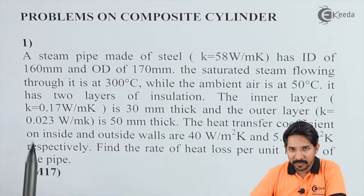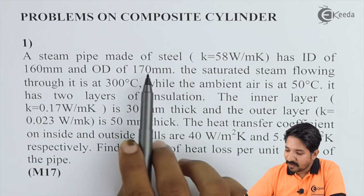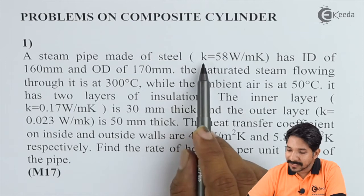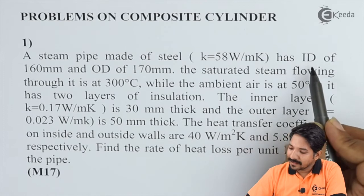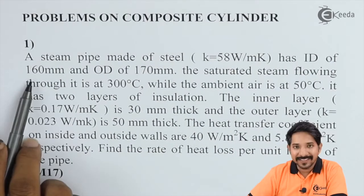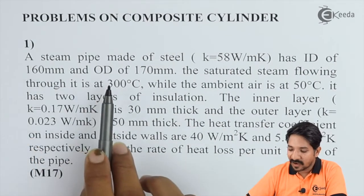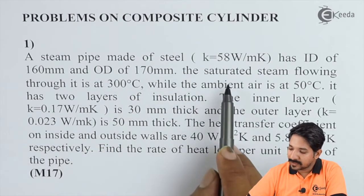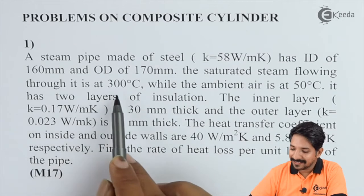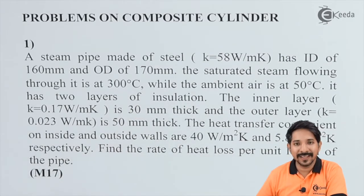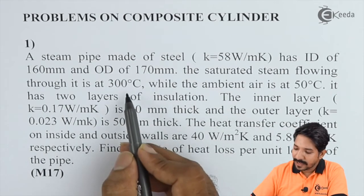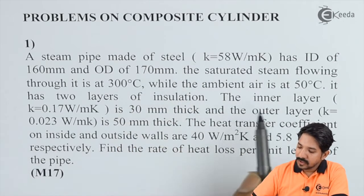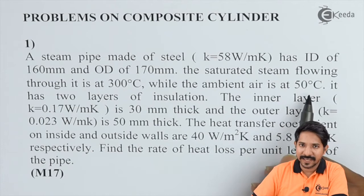The problem says: a steam pipe made up of steel, whose thermal conductivity k = 58 W/m·K, has an inner diameter (ID) of 160 mm and outer diameter (OD) of 170 mm. The saturated steam flowing through it is at 300°C, while the ambient air is at 50°C.